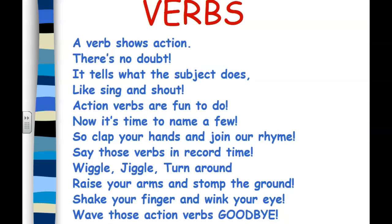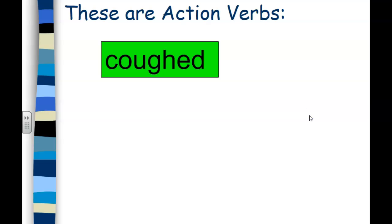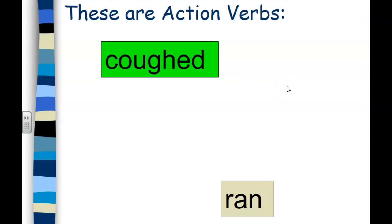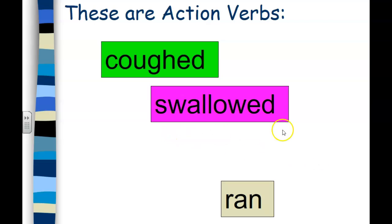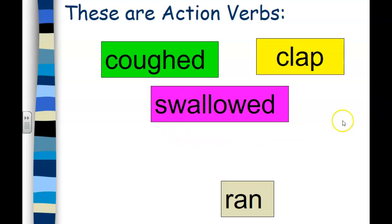Now let's look at how to identify verbs in a sentence. Here are some action verbs: coughed, ran, swallowed, clap.